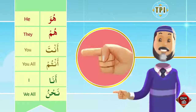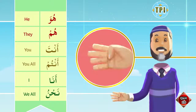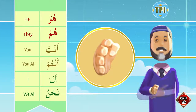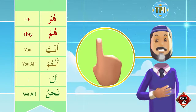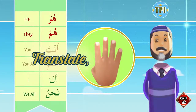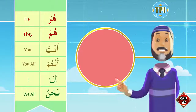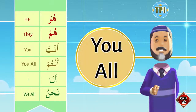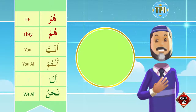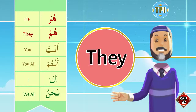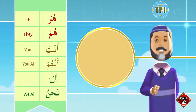Again with actions and translation: hua — he, hum — they, anta — you, antum — you all, ana — I, nahnu — we. Can you translate with actions? Hua — he, hum — they, anta — you, antum — you all, ana — I, nahnu — we.